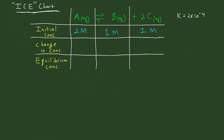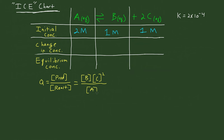But if you're not sure, you can actually calculate something called the reaction quotient Q. Q is the concentration of the products divided by the reactants. So for this case, that would be the concentration of B times the concentration of C squared — remember the stoichiometry — divided by the concentration of A. That gives us 1 divided by 2, which is 0.5.